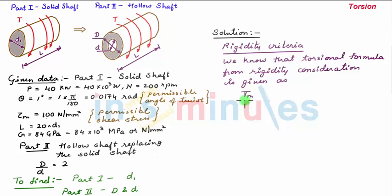Tm/J = Gθ/L, where G is the modulus of rigidity of this shaft material, which is given as 84×10³ N/mm², and L is the length of the shaft, which in the problem is given as 20 times the diameter of the shaft, that is 20d₁. So upon substituting the values we have